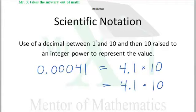Now our number between 1 and 10 here would come from the 4.1. We write the 4.1, put the decimal point in there to put it between 1 and 10.